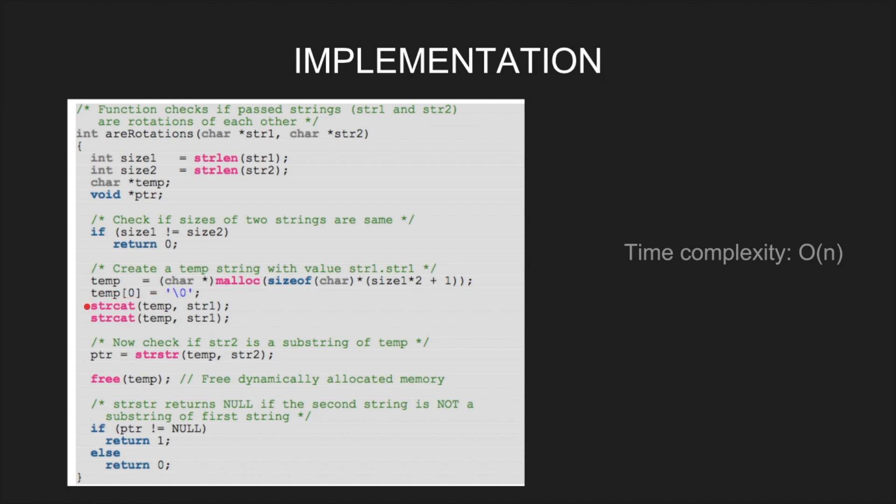Now, check if string2 is a substring of temp. Let the void pointer ptr be strstr temp comma string2. strstr returns null if the second string is not a substring of the first string. If the pointer is not equal to null, return 1, else return 0.